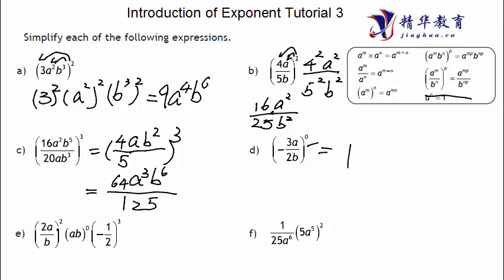Next, we apply the power of 2 to (2ab). So we get 2 to the power of 2, which is 4; a to the power of 2, which is a squared; and b to the power of 2, which is b squared. That part should be simple enough. Then we have a to the power of 5, and ab to the power of zero.